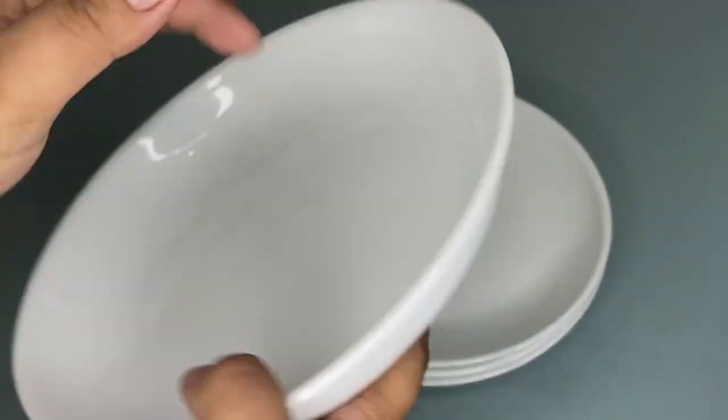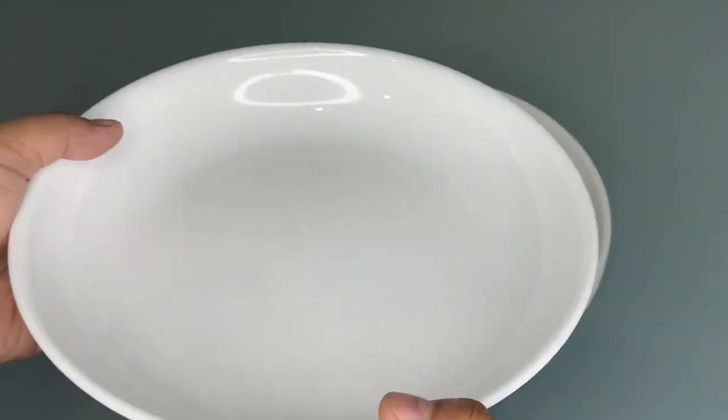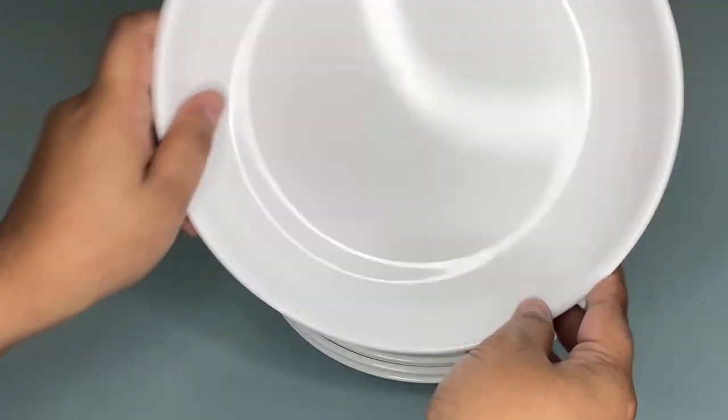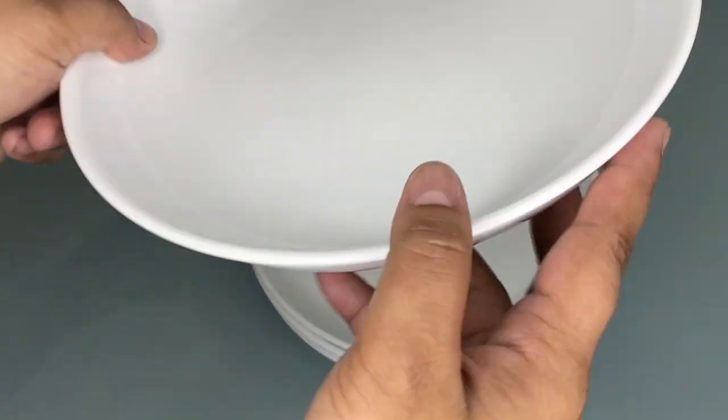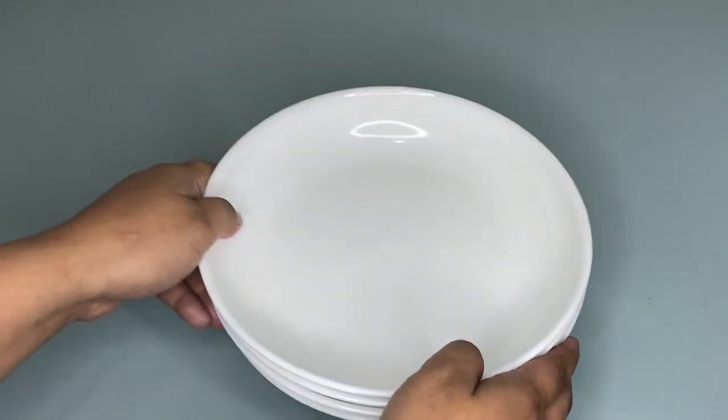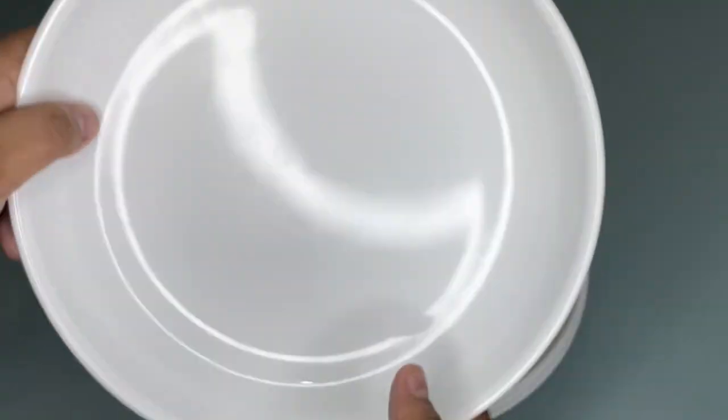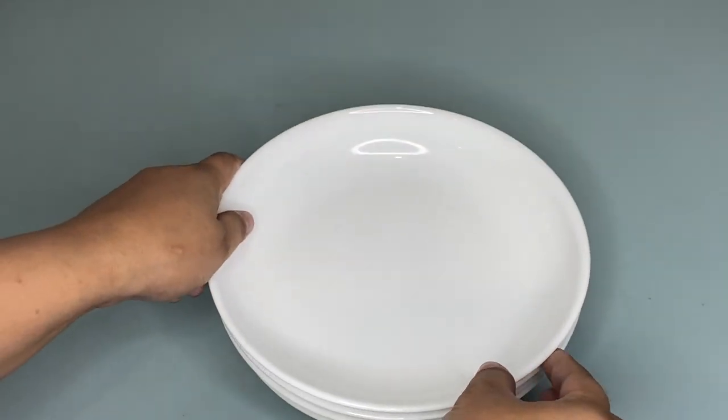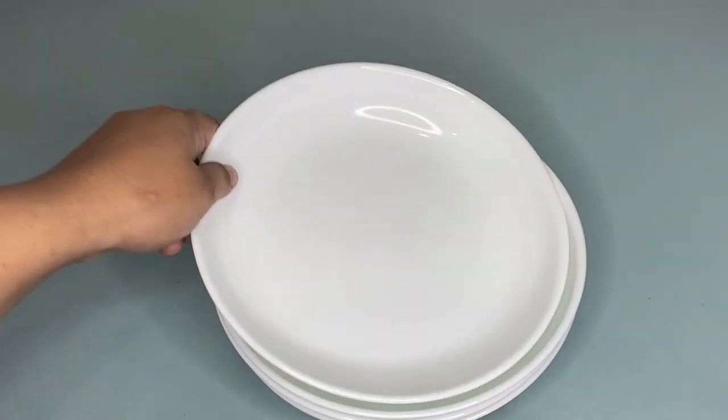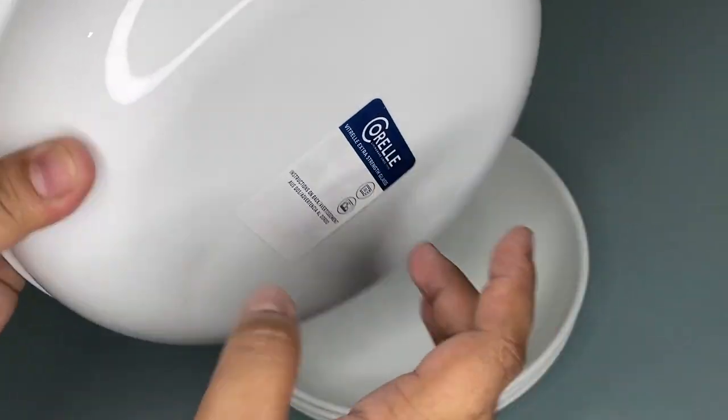So this durable dinnerware set is lightweight and these are easy to handle, and it allows for compact stacking as you can see, which takes half of the space of ceramic dishes. So I recommend this Corral versa bowls for pasta.